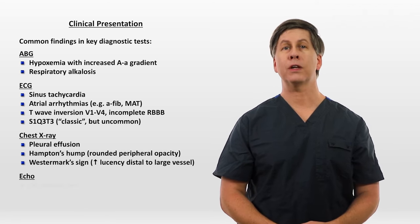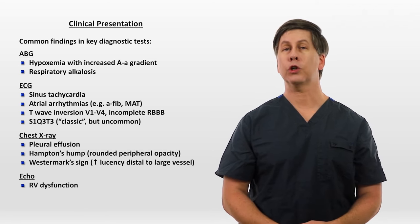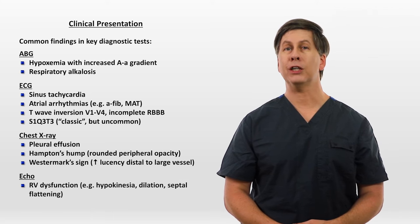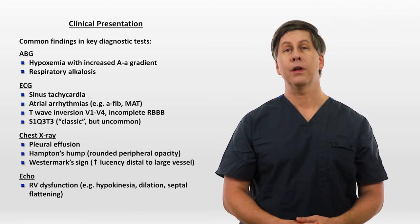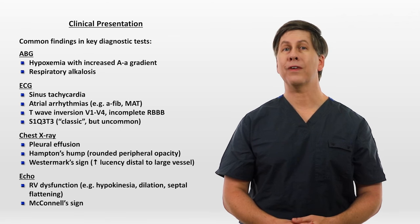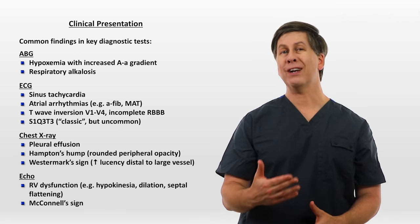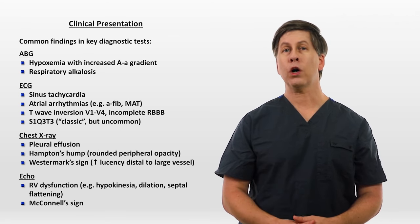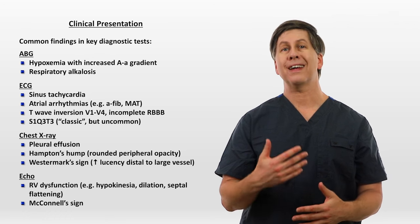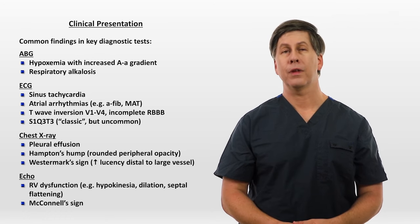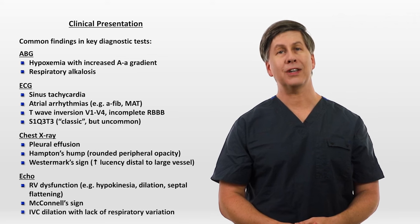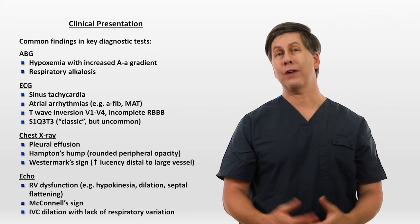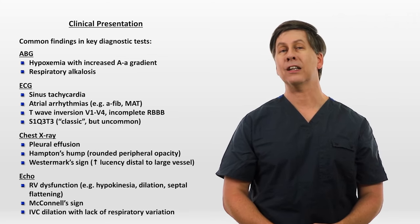Echocardiograms can show evidence of right ventricular dysfunction, such as hypokinesia, dilation, and septal flattening. McConnell's sign is the presence of akinesia of the mid-free right ventricular wall but with preserved apical contractility. Patients with RV dysfunction can also have IVC dilation with a lack of respiratory variation, consistent with elevated pulmonary artery pressures.